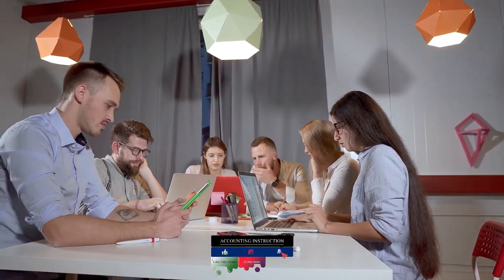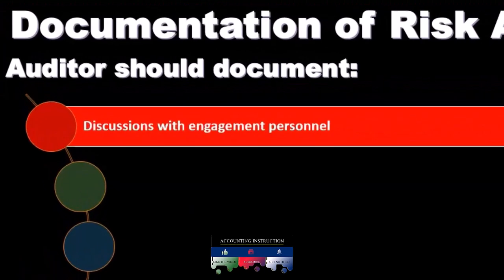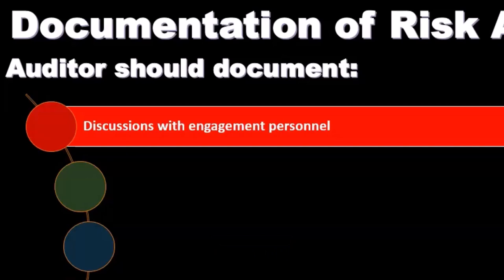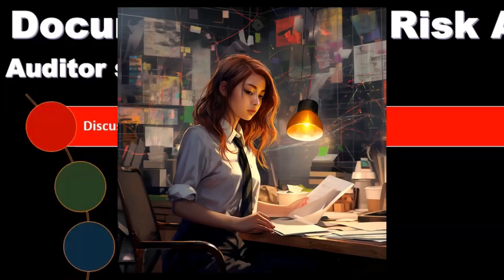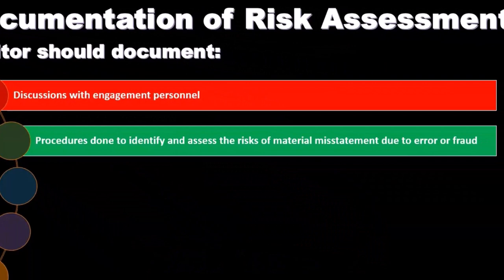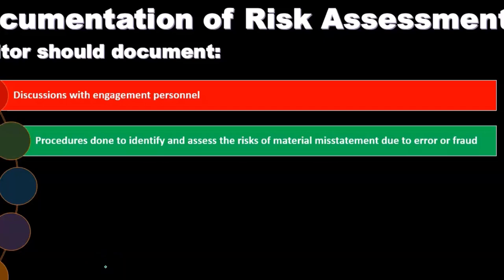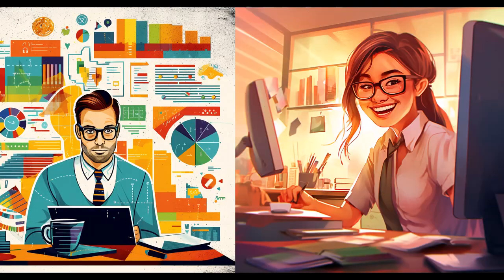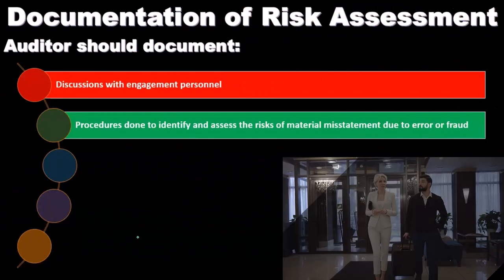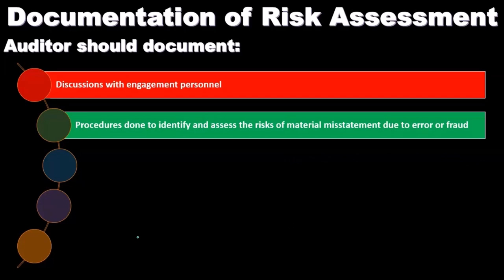Documentation of audit risk assessment: auditors should document discussions with engagement personnel. When we conduct inquiries, we document the specific questions geared toward specific assertions, as well as the responses received, placing them in our working papers as audit evidence. We also document the procedures done to identify and assess the risk of material misstatement due to error and fraud. The goal is that five years later we can look back and identify exactly what procedures were performed and what the results were.